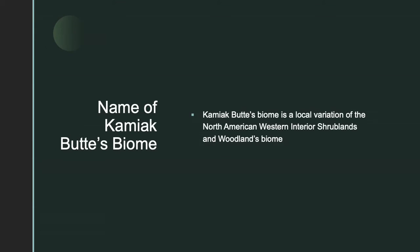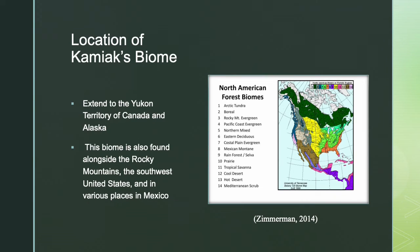Kamiak Butte's biome is a local variation of the North American Western Interior shrublands and woodlands biome, named for the various shrub plant life and the wooded ecosystem. This biome extends to the Yukon territory of Canada and Alaska, is also found alongside the Rocky Mountains, the southwest United States, and various places in Mexico. Most importantly, the North American Western Interior shrublands and woodlands biome resides in Kamiak Butte and other parts of the Palouse. Shrublands and woodlands can also be found in parts of South America, Africa, and even Australia.